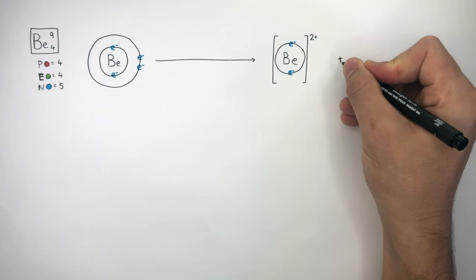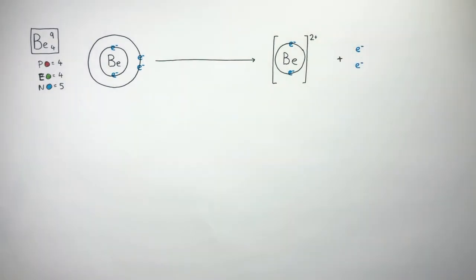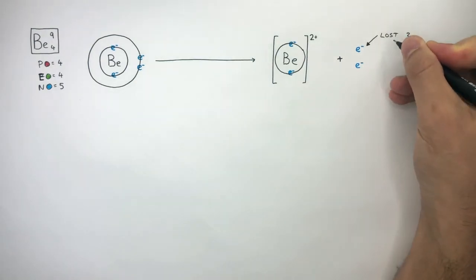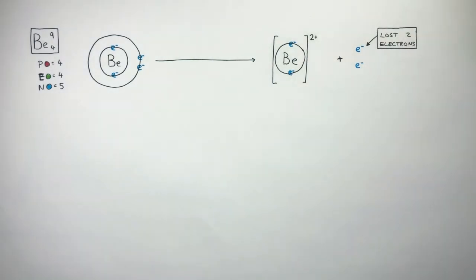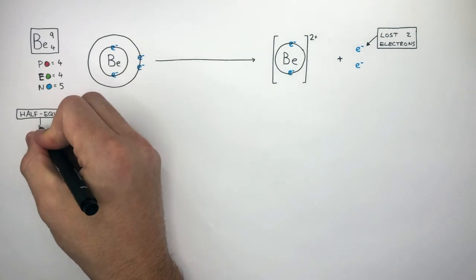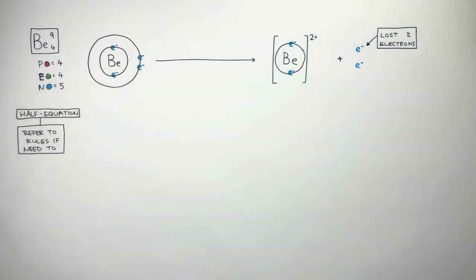We write plus two electrons as these are the two electrons which have been lost. The beryllium atom has lost two electrons. We can show how the beryllium atom has become a beryllium cation using a half equation — refer to the rules if you need to. Pause the video and go back to the beginning if you cannot remember the rules.